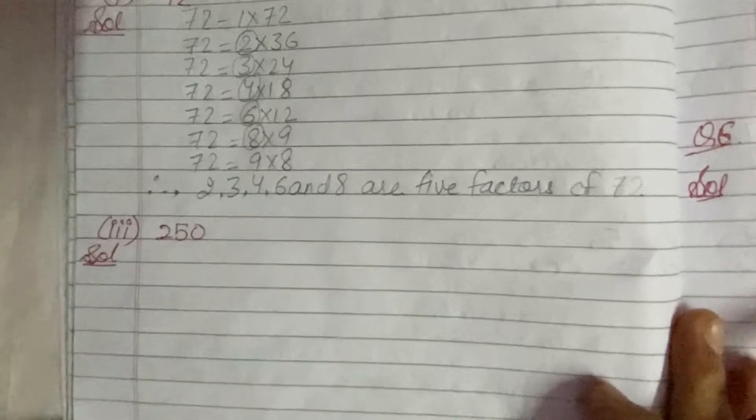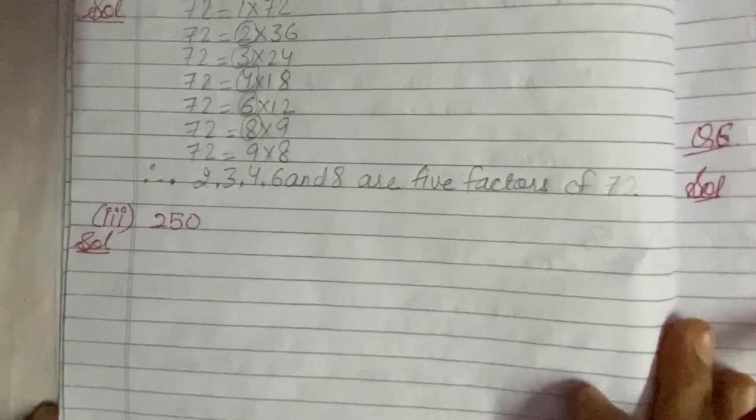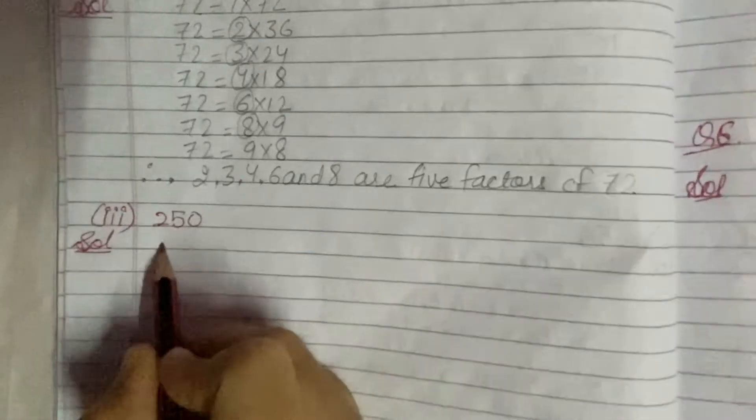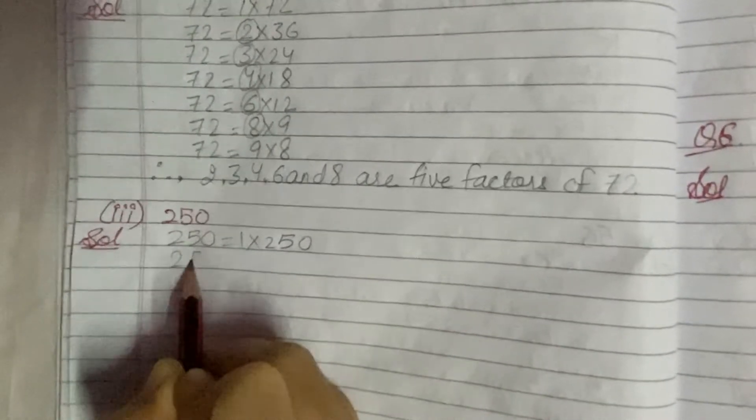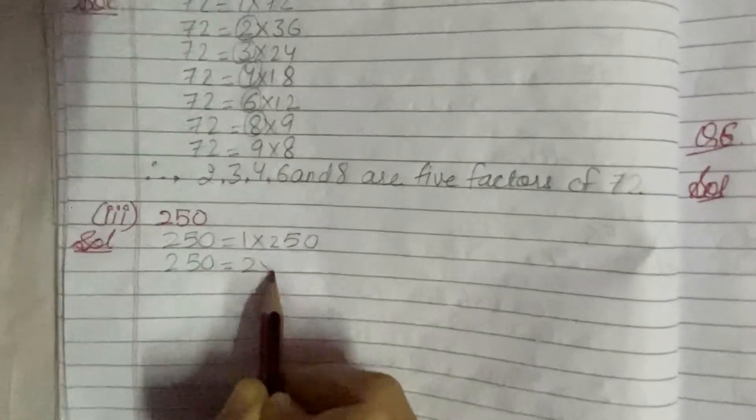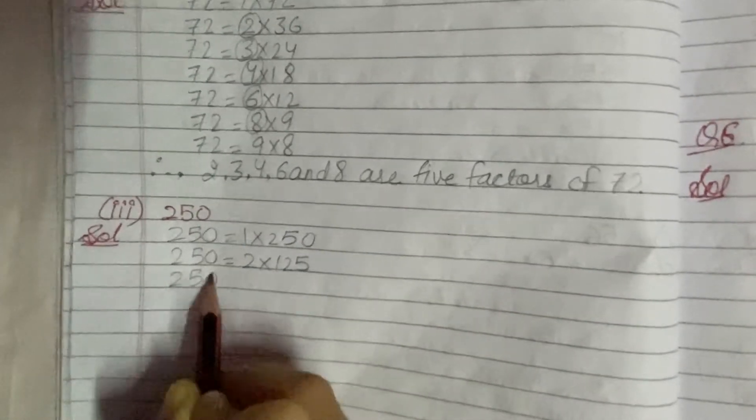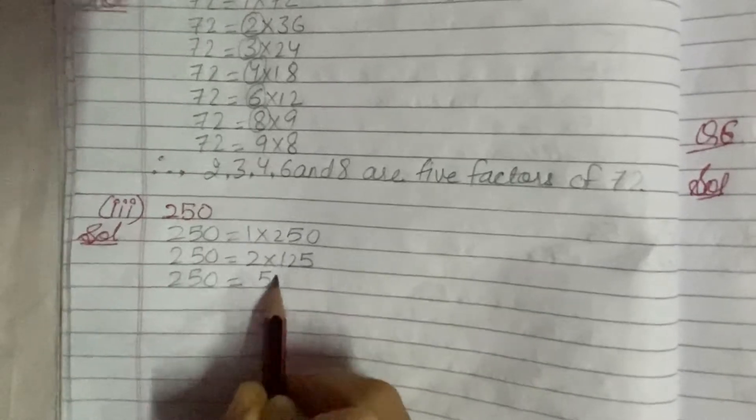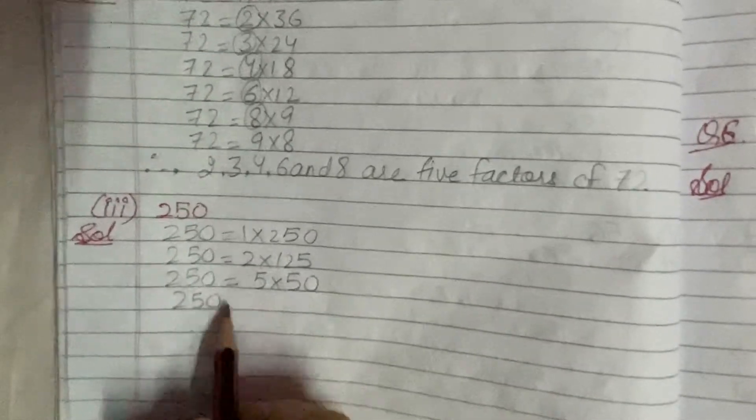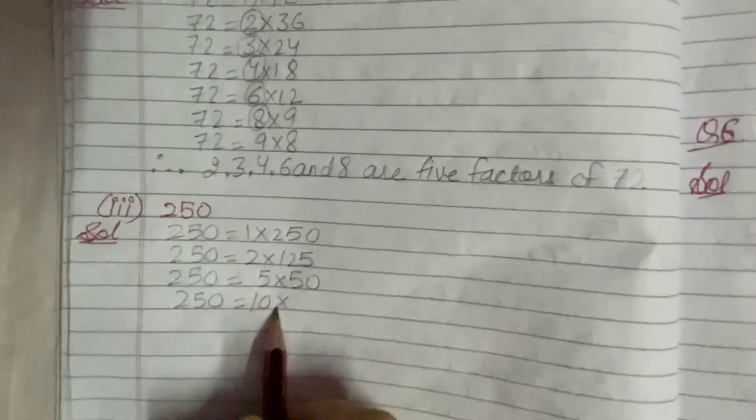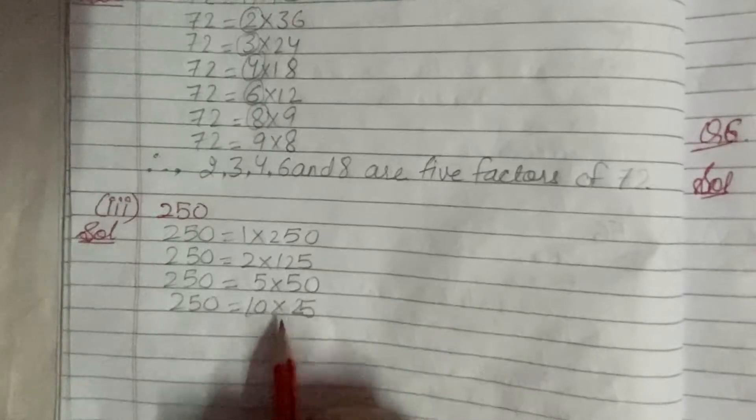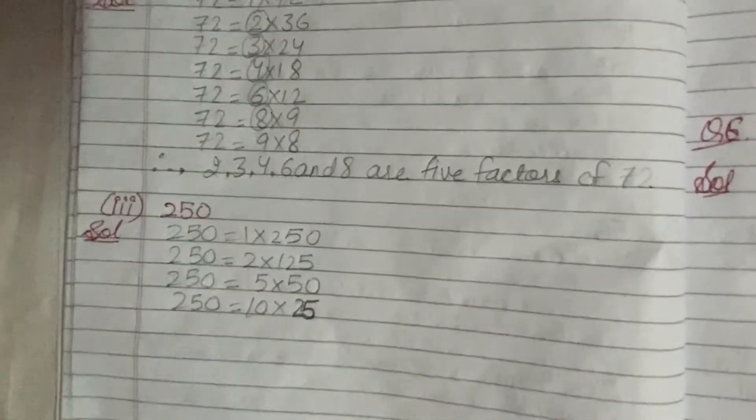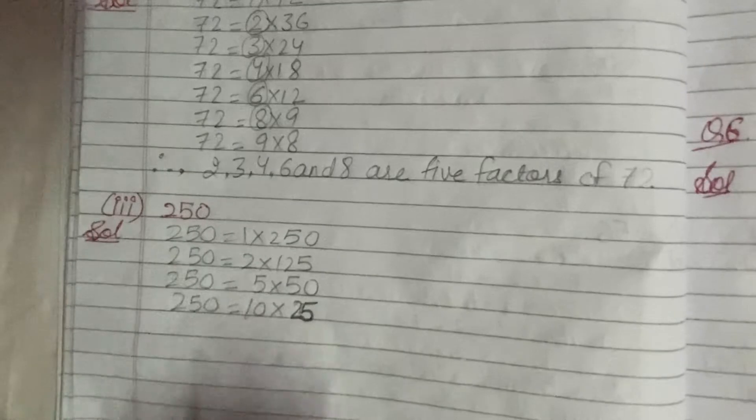Now next is the third part. I have taken the third part of the question and it is 250. Now 250 can be written as 1×250, 2×125, 5×50, and 10×25. Now you want to write down 5 factors, right, other than 1 and the number itself?